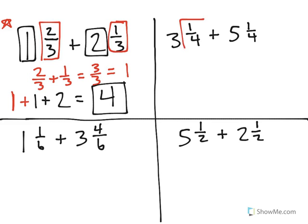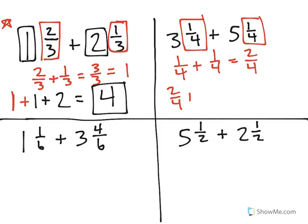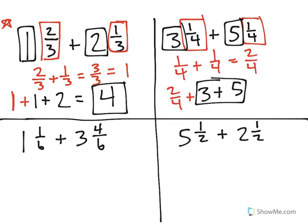Using that same method, I'll complete this problem on the right. 1/4 plus 1/4 is equal to 2/4. So now I have 2/4 plus 3, whole numbers now, plus 5. Well, let's just do 3 plus 5 and add the whole numbers to get 8. 8 plus 2/4 is the same thing as saying 8 and 2/4 for our correct answer.